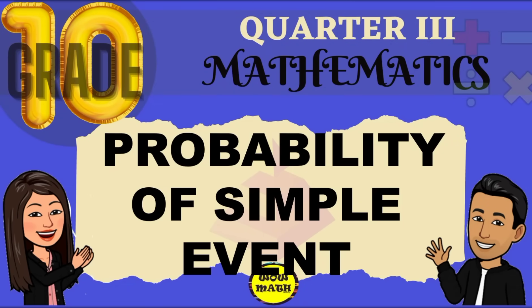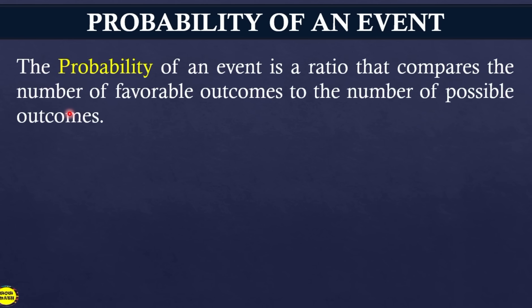Hello mga kawamat, in this video lesson we will discuss about probability of simple event — how to compute the probability of a simple event. The probability of an event is a ratio that compares the number of favorable outcomes to the number of possible outcomes. Recall from our previous video lesson about the basic concept of probability: a simple event is when an event involves a single element of the sample space.